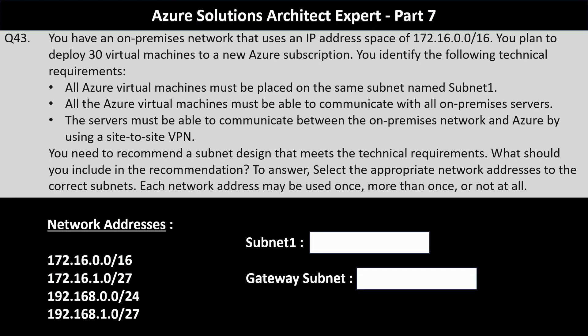You have an on-premise network that uses an IP address space of 172.16.0.0 with a prefix of 16. You plan to deploy 30 virtual machines to a new Azure subscription. You identify the following technical requirements: all Azure virtual machines must be placed on the same subnet named subnet 1, all Azure virtual machines must be able to communicate with all on-premise servers, and servers must be able to communicate between the on-premise network and Azure by using a site-to-site VPN. You need to recommend a subnet design that meets the technical requirements. What should you include in the recommendation?